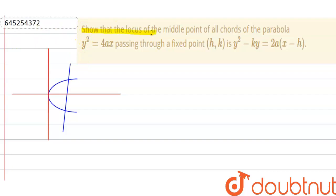Hello everyone. Our question is to show that the locus of the middle point of all chords of the parabola y² = 4ax, passing through a fixed point (h, k), is y² - ky = 2a(x - h).